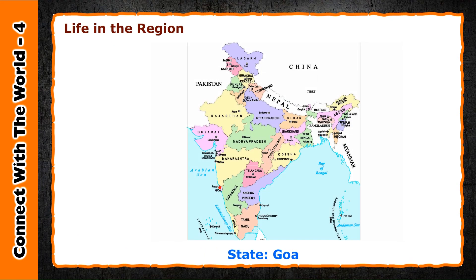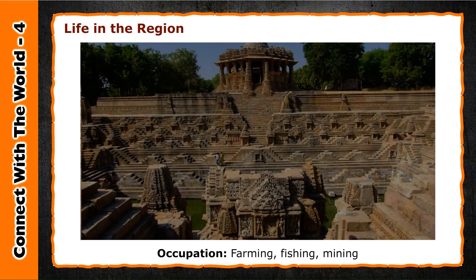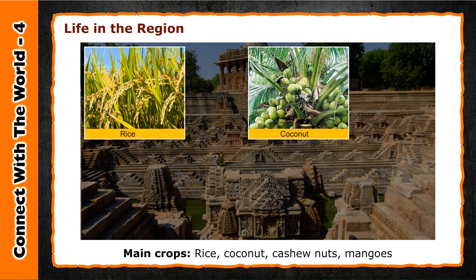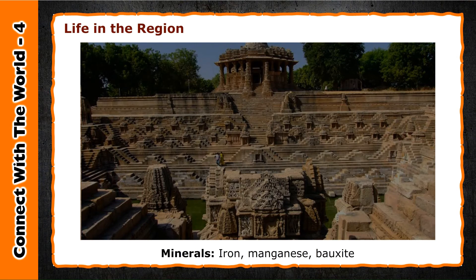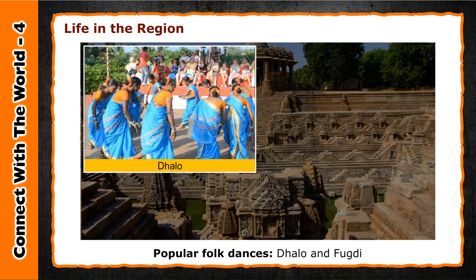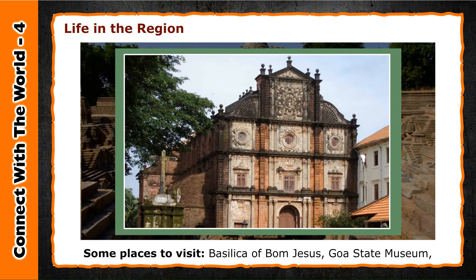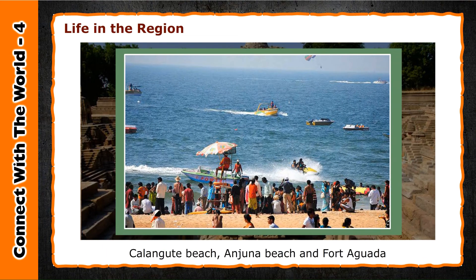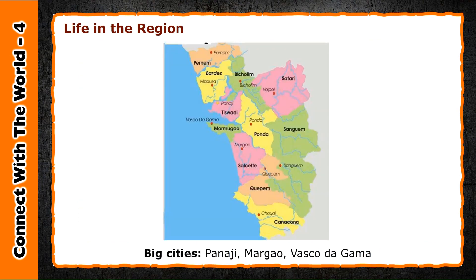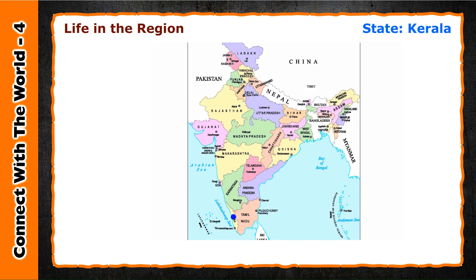State: Goa. Capital: Panaji. Main language: Konkani. Occupations: farming, fishing, and mining. Main crops: rice, coconut, cashew nuts, and mangoes. Minerals: iron, manganese, and bauxite. Popular folk dances: Dhalo and Fugdi. Some places to visit: Basilica of Bom Jesus, Goa State Museum, Calangute Beach, Anjuna Beach, and Fort Aguada. Big cities: Panaji, Margao, and Vasco da Gama.